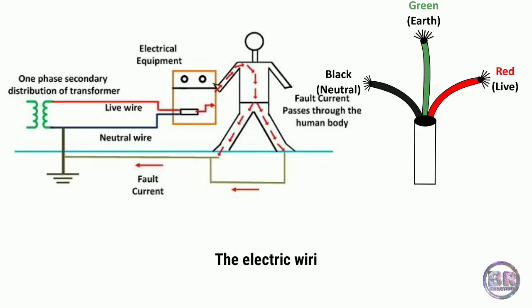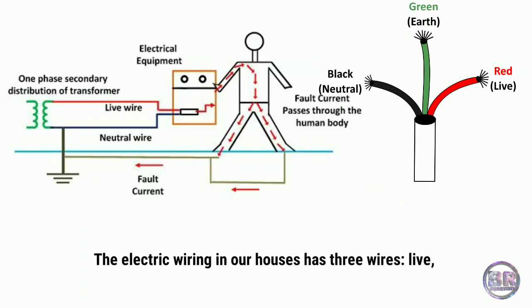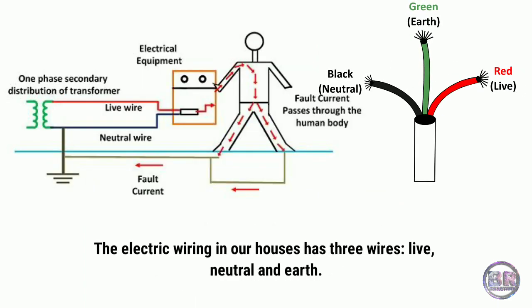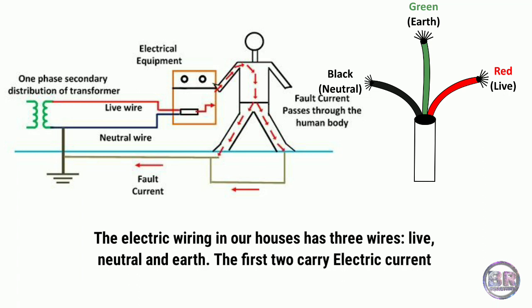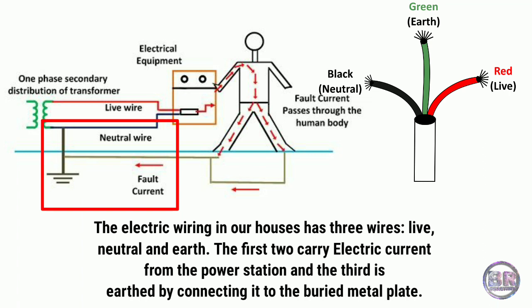The electric wiring in our houses has three wires: live, neutral, and earth. The first two carry electric current from the power station, and the third is earthed by connecting it to the buried metal plate.